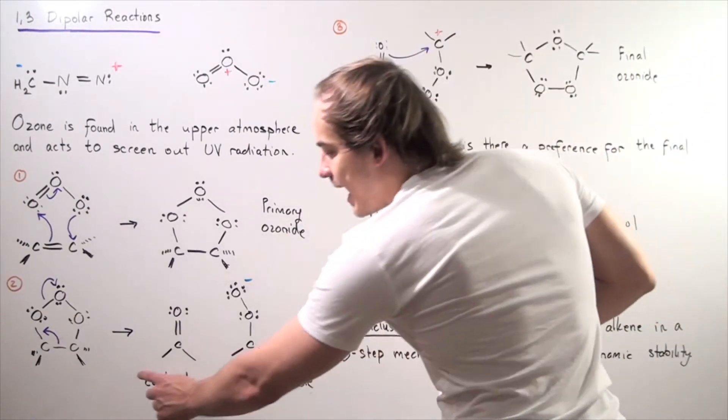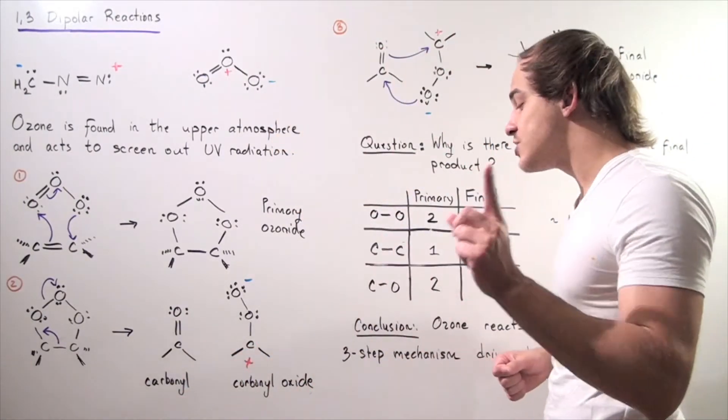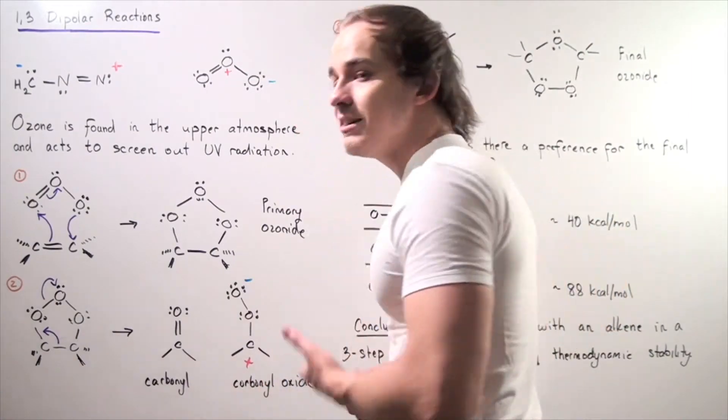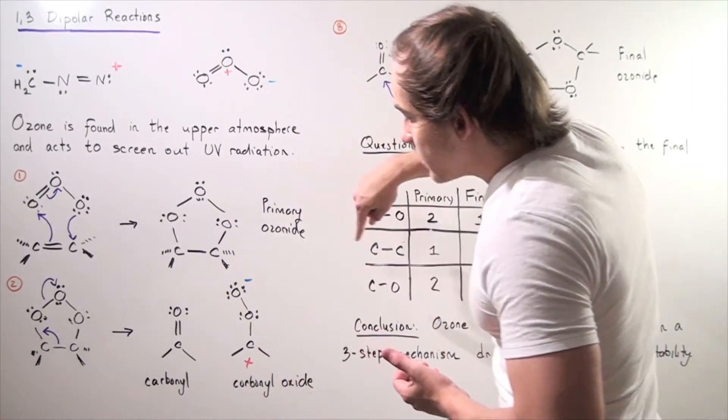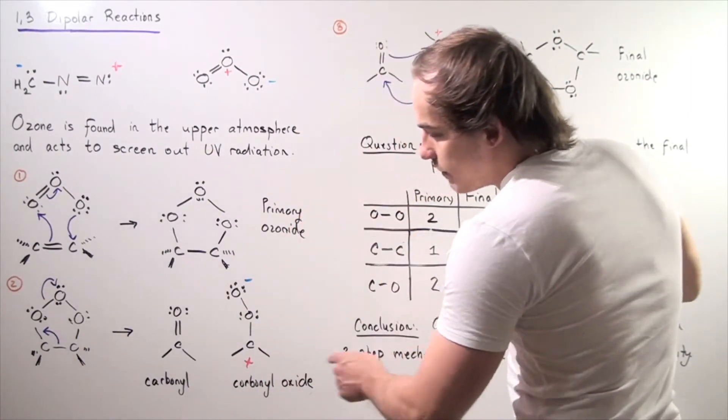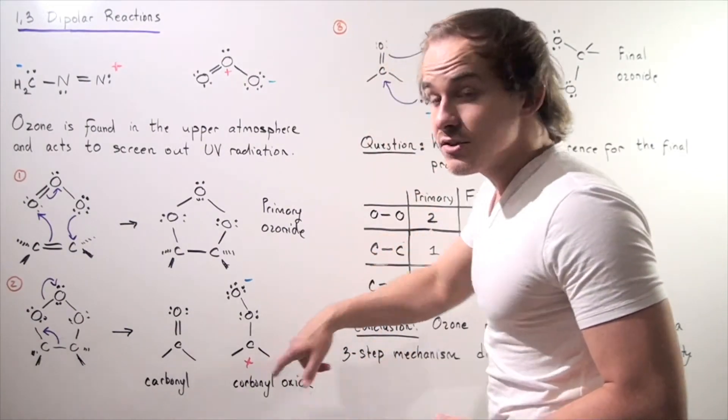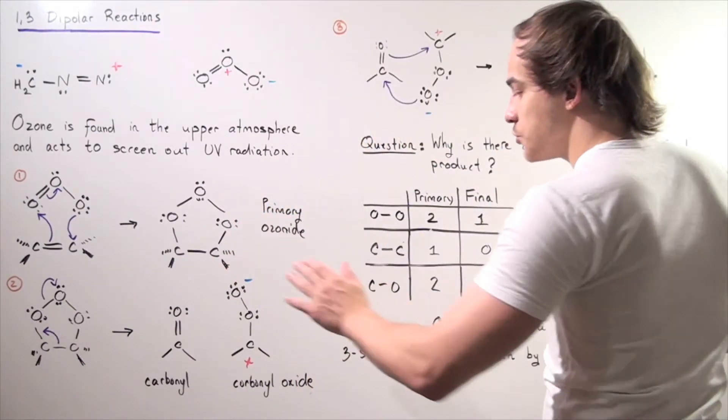So now we have a carbonyl compound as well as a carbonyl oxide. So we have a clear separation of charge between this carbon, a positive charge, and this oxygen, a negative charge. This molecule is neutral.